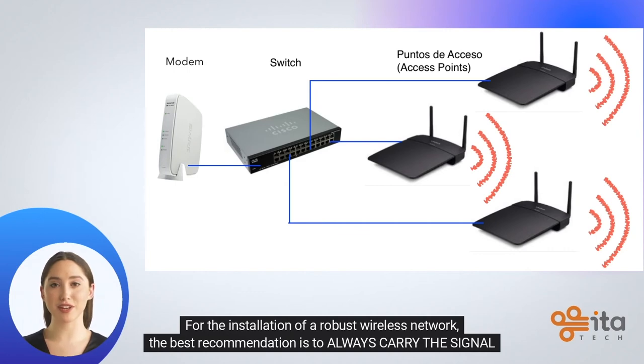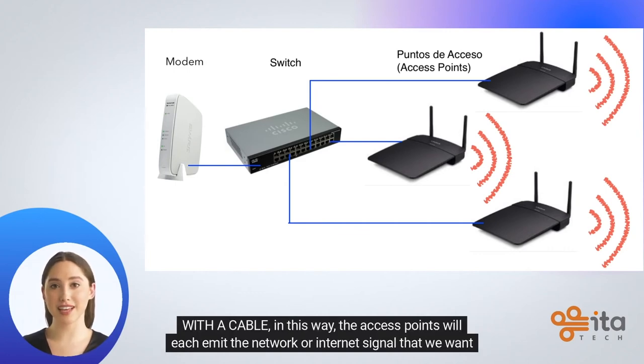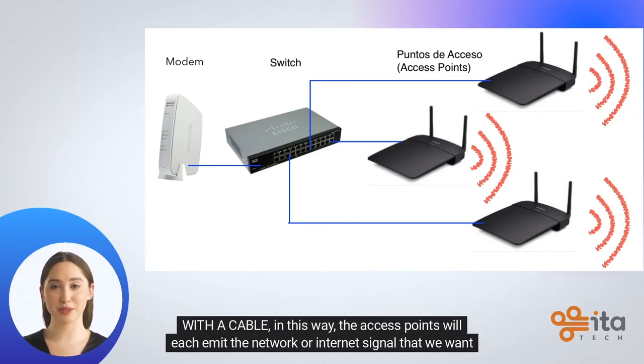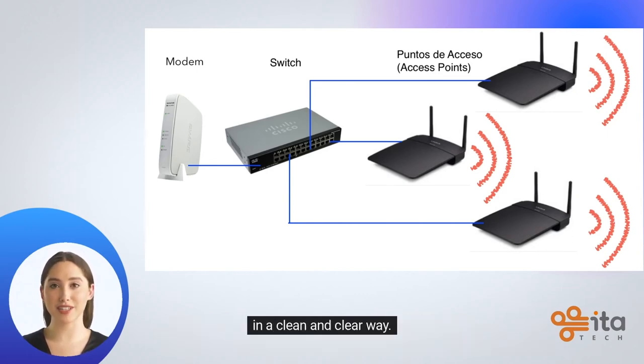For the installation of a robust wireless network, the best recommendation is to always carry the signal with a cable. In this way, the access points will each emit the network or internet signal that we want in a clean and clear way.